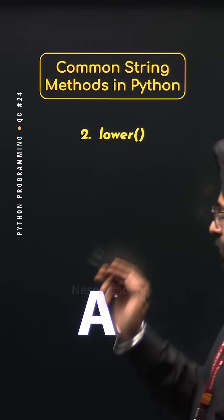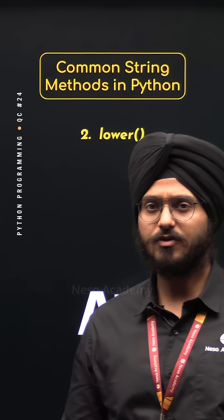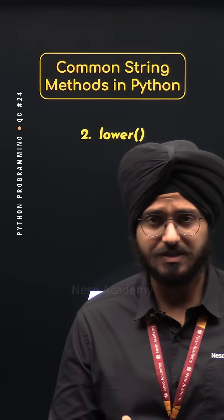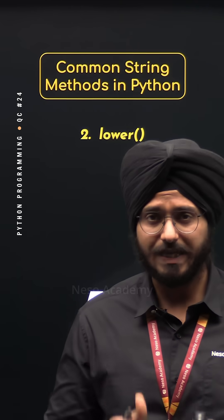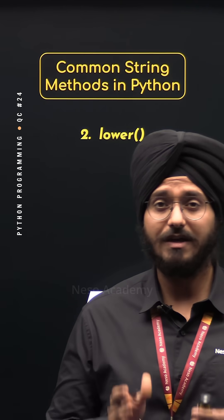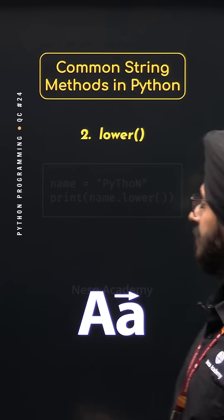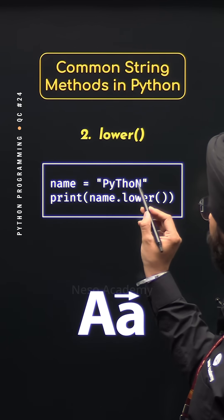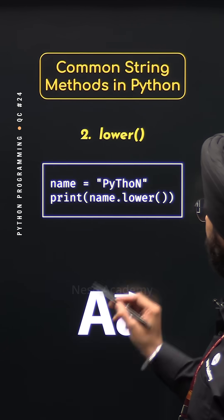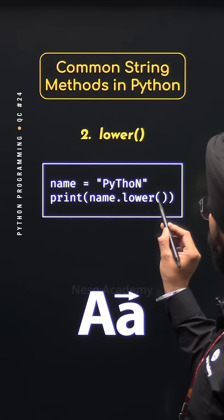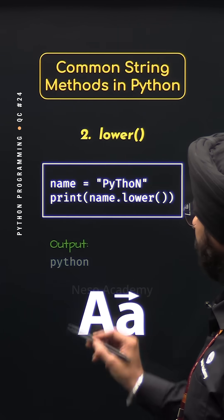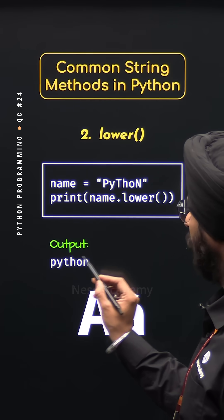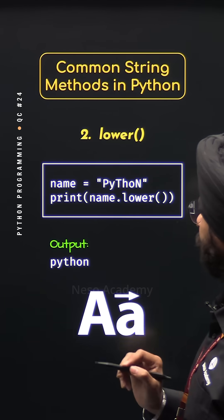2. Lower method: The lower method is used to convert all uppercase letters to lowercase letters in a string. For example, the name variable is pointing to the string 'python'. Name.lower will give us this result — 'python' with all lowercase letters.